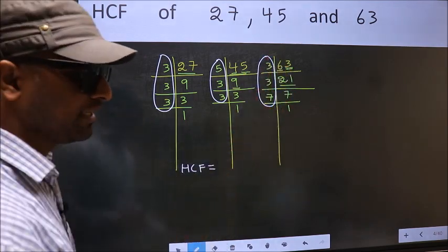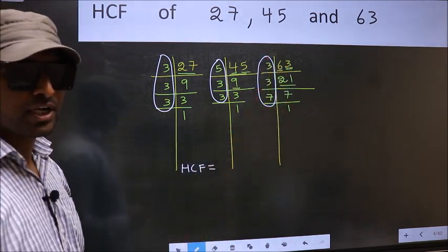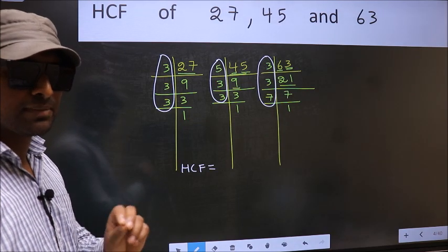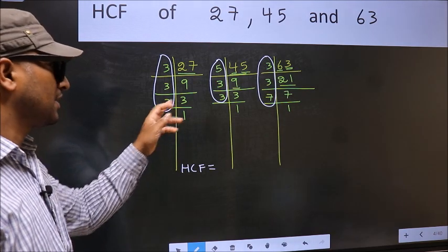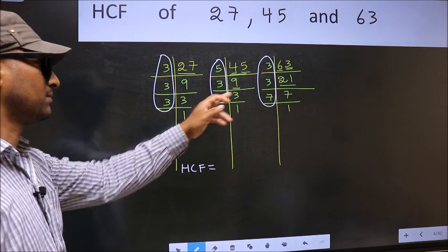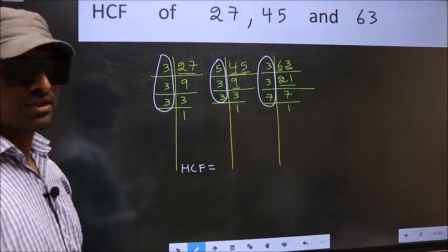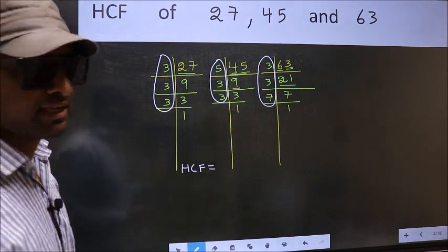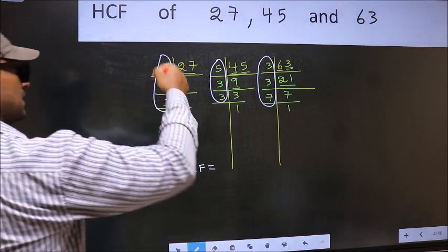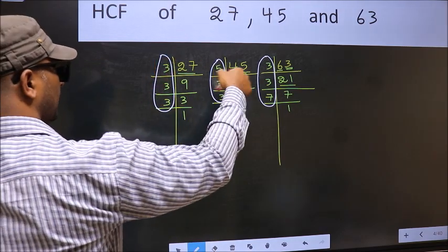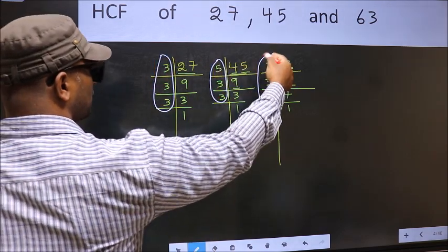I repeat. HCF is the product of numbers which should be present in these 3 places. So now let us find the numbers which are present here, here, and also here.